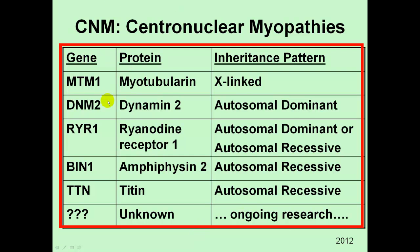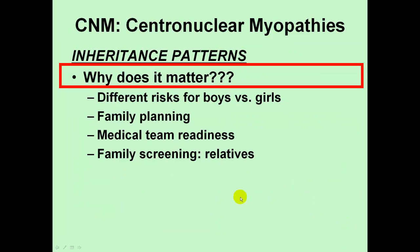That's my overview on the different genes, proteins, and inheritance patterns. There is still research going on to find other genetic mutations that cause centronuclear myopathy. The reason why the inheritance pattern matters is because it highlights that there are different risks for boys and girls, and it's important for family planning and medical decision making. If a mother is pregnant and has a family history of centronuclear myopathy, her ability to assess the risk for that child really depends upon what genetic form of centronuclear myopathy she is a carrier for. It would be wise to have a genetic counselor involved.